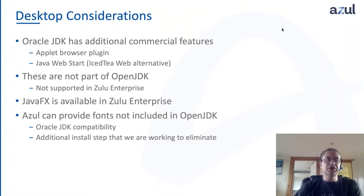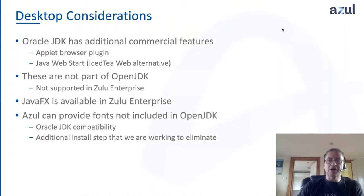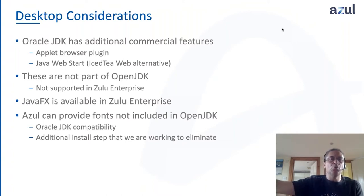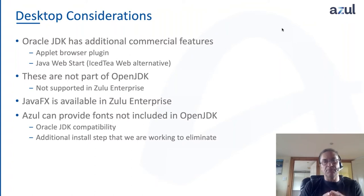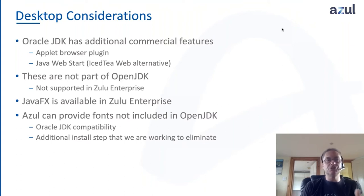Similarly, if you're using Java Web Start, which is a different deployment technology — sort of halfway between applets and applications — you install the application on your desktop and every time you start it up it checks where it was downloaded from to see if there are any new files to download. We do have an open source alternative called IcedTea-Web; it's not a drop-in replacement and does require a little bit of configuration, but it is a possibility to use that instead of Java Web Start.